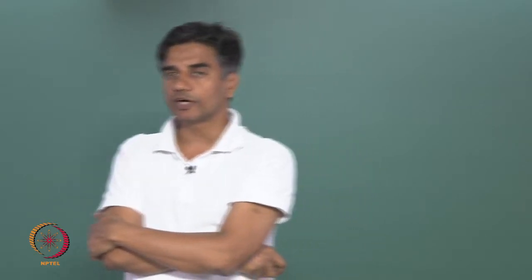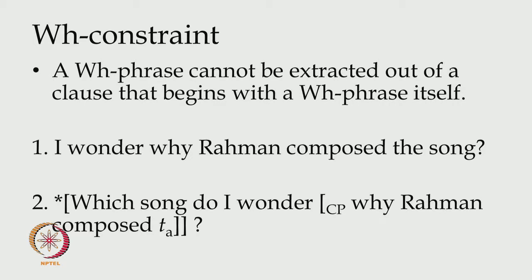Do you remember when we talked about some of the lexical properties of verbs? We talked about the verb 'wonder'. One of the features of the verb 'wonder' is that it takes a WH clause as a complement — an interrogative sentence as a complement. So in sentence one, 'why Rahman composed the song' is the complement of the verb 'wonder': 'I wonder why Rahman composed the song.' This clause begins with a WH element itself. Therefore, an extraction of another element out of this clause is not allowed.